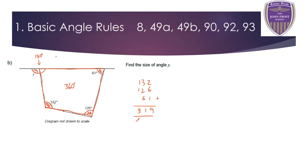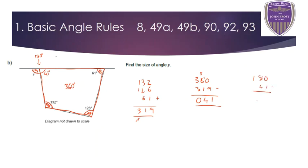Now I can subtract that 319 from 360. Doing that — borrowing because I can't do zero take away nine — gives me 41 degrees. So this angle here is 41 degrees. Now I know what I need to find Y, because I need to take that 41 degrees away from 180. So 180 minus 41 gives me Y equal to 139 degrees.